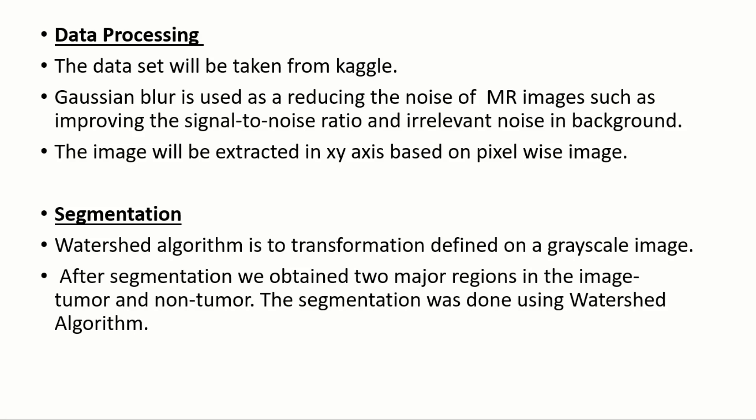In the segmentation part, we use the watershed algorithm. The watershed algorithm is mainly used to transform the image into a grayscale image. In our project, the MRI scan image will be converted into a grayscale image. After segmentation, there will be a clear difference between an image with a tumor and without a tumor. Segmentation is done only by the watershed algorithm.